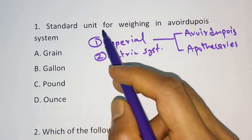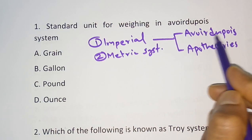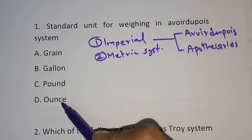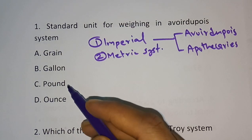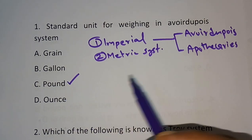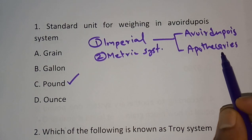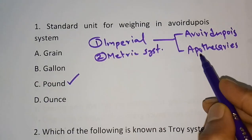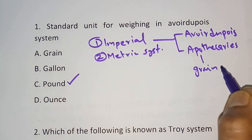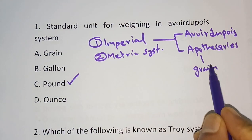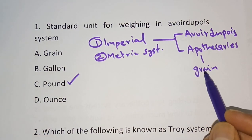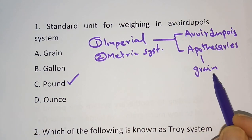The question here is the standard unit for weighing in avoirdupois. The options are grain, gallon, pound, and ounce. The correct answer for this question is option C — pound. In case of apothecaries, the standard unit for weighing is grain. These are important points, and students often get confused between the two systems.